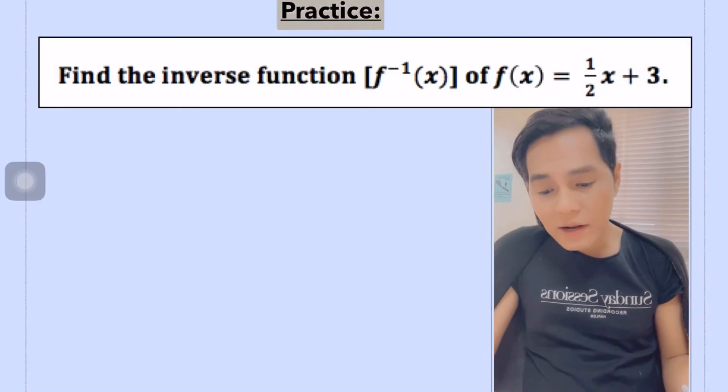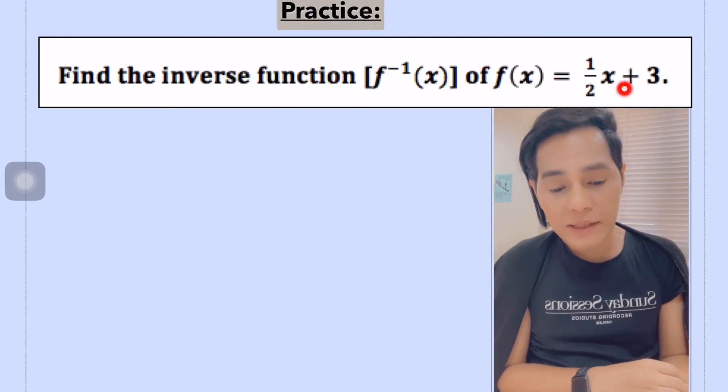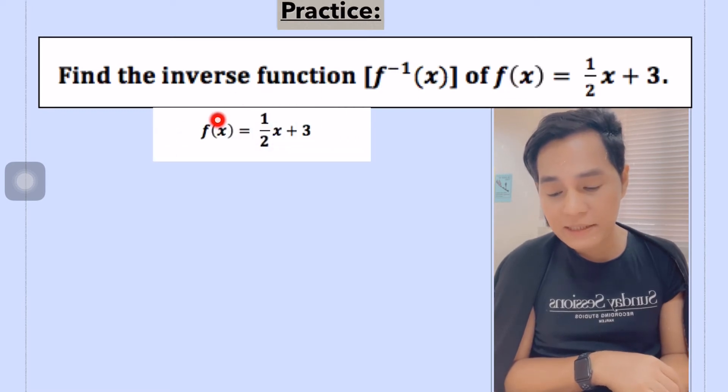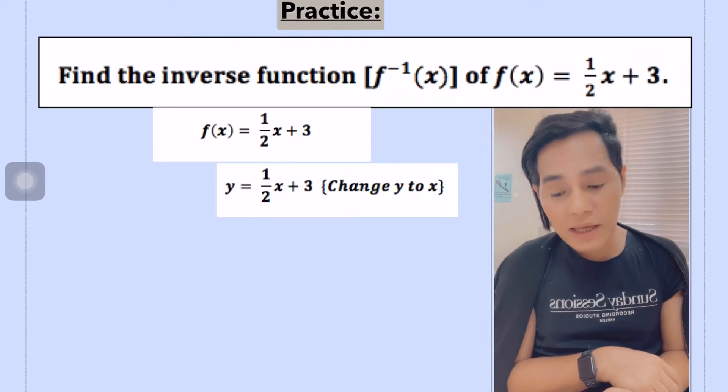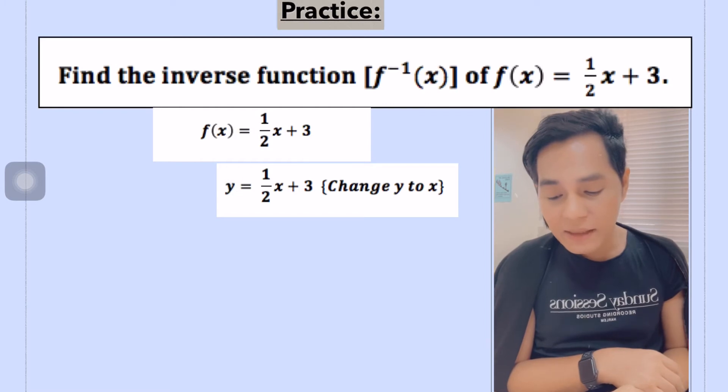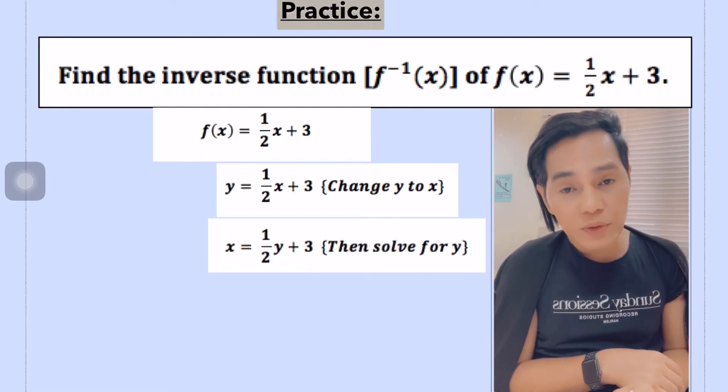I have here another example. Find the inverse of f(x) equals one half x plus 3. So the first thing to do is just copy first the given function. We have to be very organized here. And then after that, we are going to change this f(x) to y and then copy everything. And then the next step here is we're going to change y to x. We are changing now y to x. And then after that, we're going to solve for y.